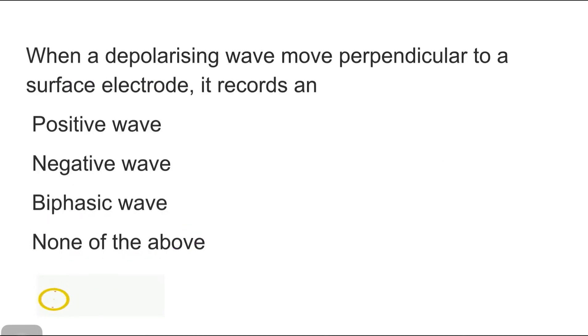This is a question where you have to brush up the physiology. When a depolarizing wave moves perpendicular to a surface electrode, it records AN. The options are positive wave, negative wave, biphasic wave, and none of the above. So you have to understand when a depolarization wave moves towards an electrode, it will produce a positive deflection. When a depolarization wave moves away from the electrode, then it will produce a negative deflection.